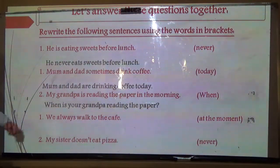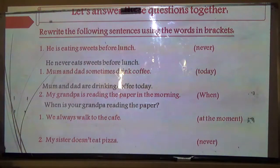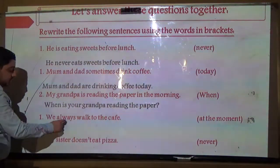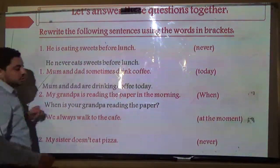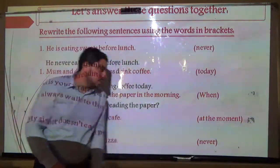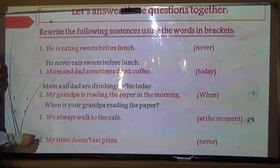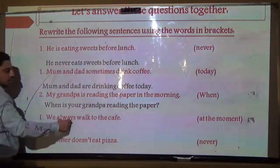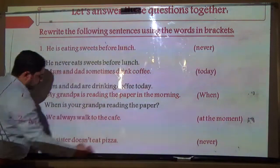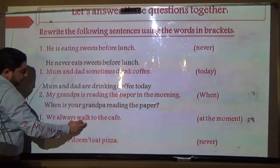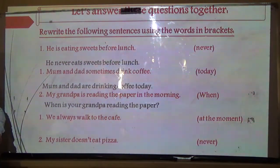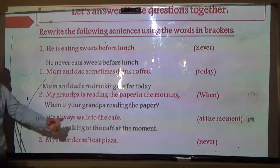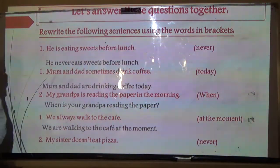Number four: 'We always walk to the cafe' — change to 'at the moment.' We remove 'always,' add 'at the moment' at the end, and change the verb to present continuous. Since the subject is 'we,' we use 'are' plus -ING. Answer: 'We are walking to the cafe at the moment.'